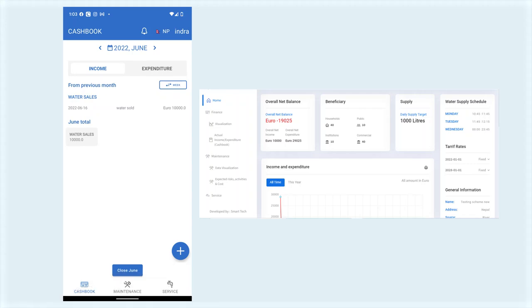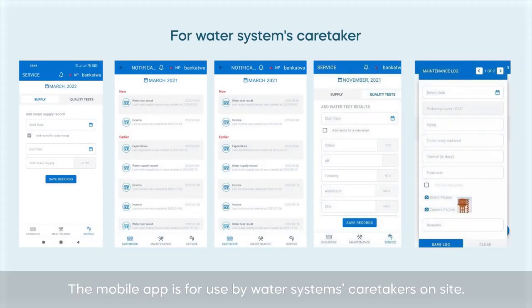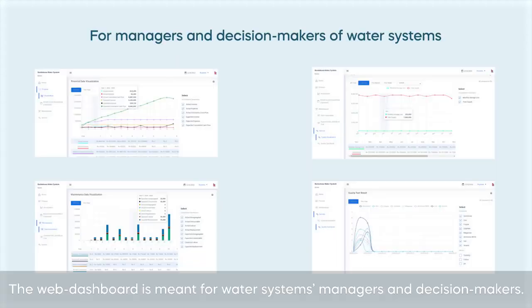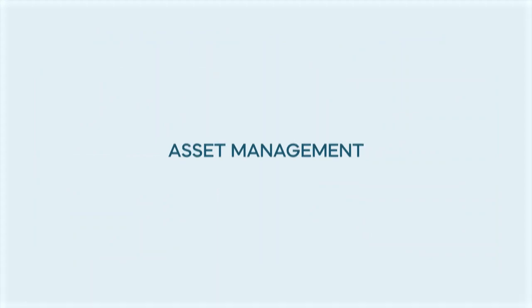A mobile app and a web dashboard support the actual monitoring of a water system's asset management plan. They have been developed together with end users in a human-centered design process. The mobile app is for use by water system caretakers on site, while the web dashboard is meant for water system managers and decision makers. The app and dashboard have a two-way interaction and three main functionalities.